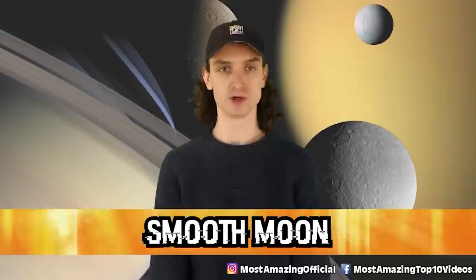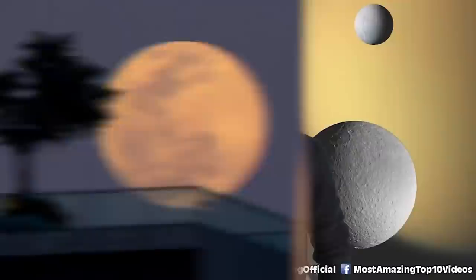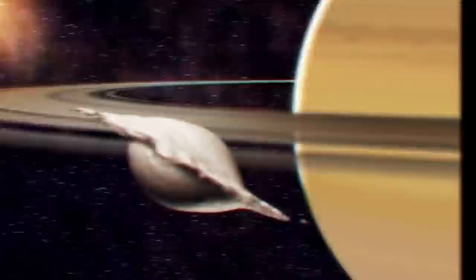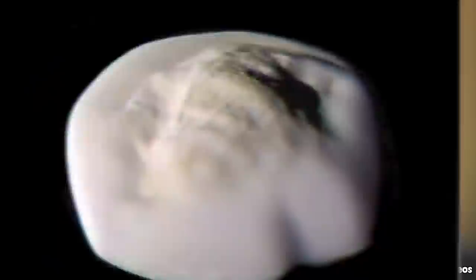Number five, smooth moon. When we think of moons in the sky or how other planets have other moons, we think of them as our own. Just a big ball of cheese in the sky, a big sphere with craters. Well, as we've seen so far in this list, some moons can look like the Death Star and some moons can look like chewed gum. Saturn's small moon Atlas looks like a UFO.